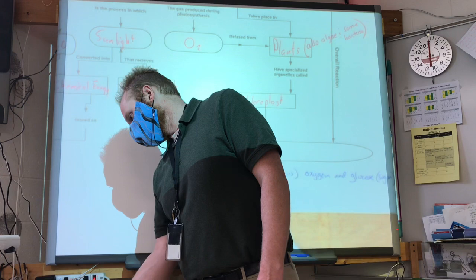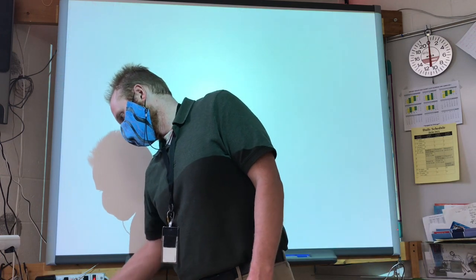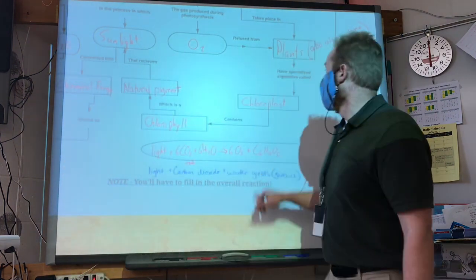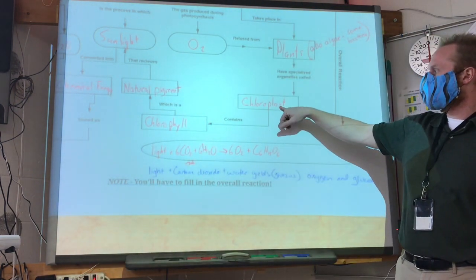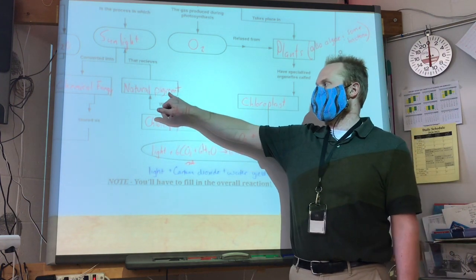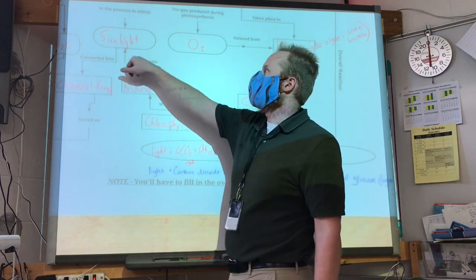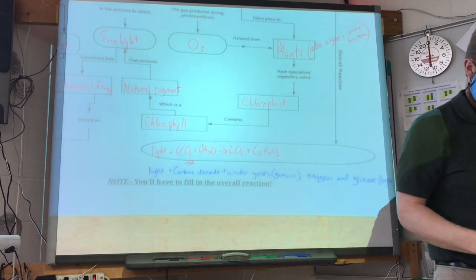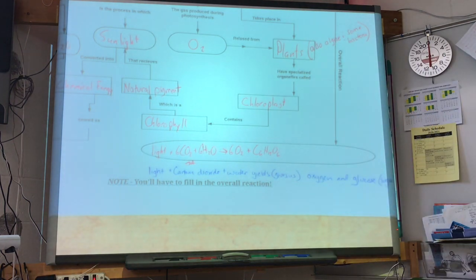Chloroplasts contain a pigment called chlorophyll. Plants have a specialized organelle called the chloroplast that contains chlorophyll, which is a natural pigment that receives sunlight and allows photosynthesis to occur. If you get grass stains on your clothes, it's chlorophyll — you have the pigment chlorophyll on your clothes.